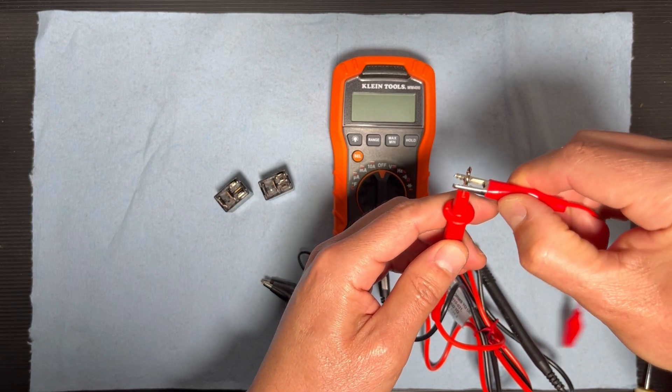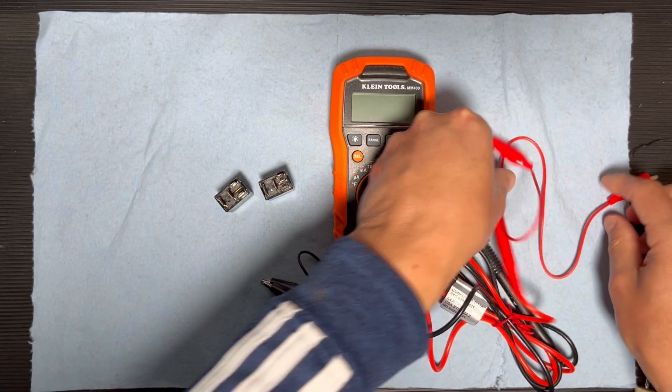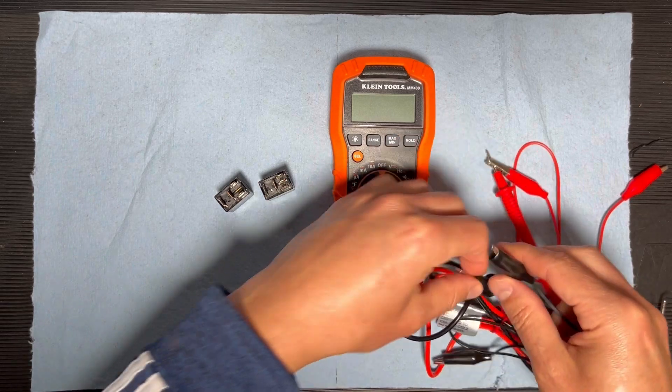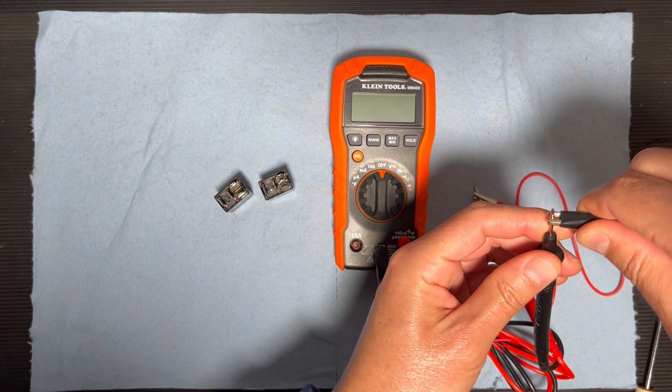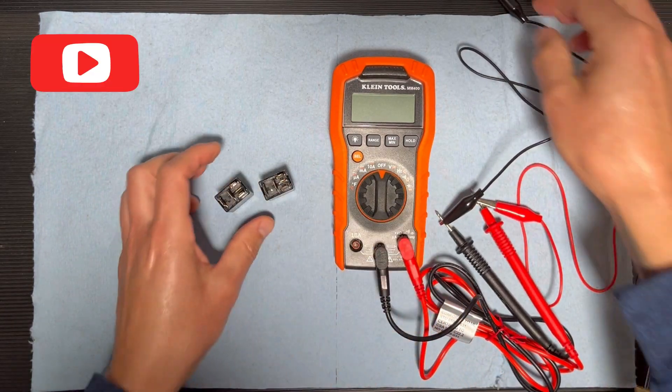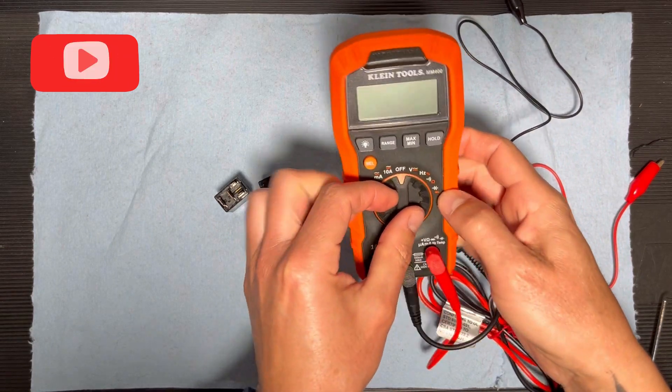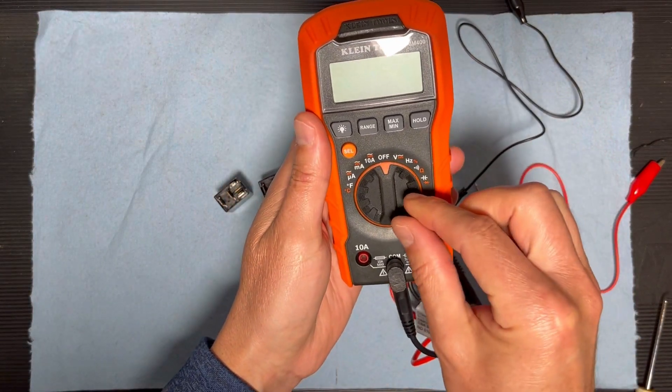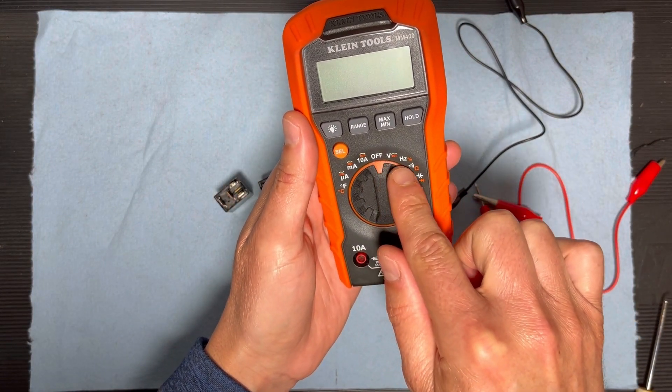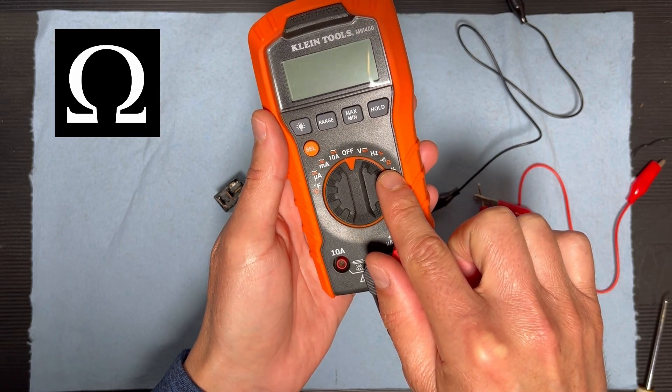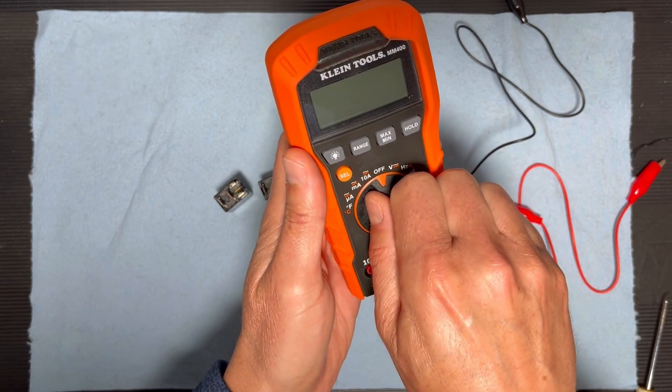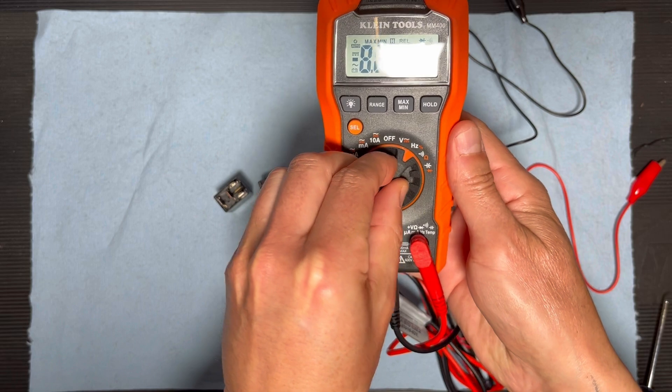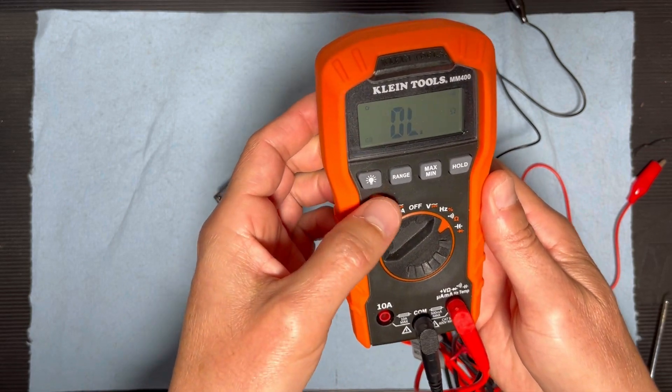Now I'm going to turn on the multimeter. I'm going to select the Omega symbol right there, so it's going to be one, two, and three.